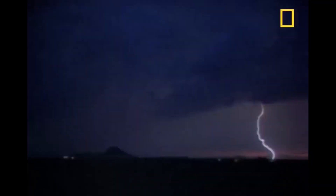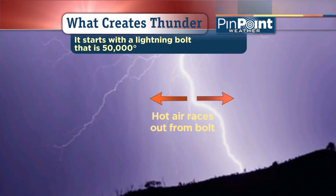Thunderstorms start from a cumulonimbus and have thunder and lightning. The lightning is basically a supercharged shock — like when you walk across a carpet and touch something — but on a much higher scale. We're talking millions of volts of electricity, and the air can heat up to 60,000 degrees Fahrenheit. This creates a huge fast-moving shockwave of superheated air, and that's the thunder you hear. These thunderstorms can bring heavy rain and hail, and the winds felt on the ground can be 40 to 50 miles an hour or even greater.